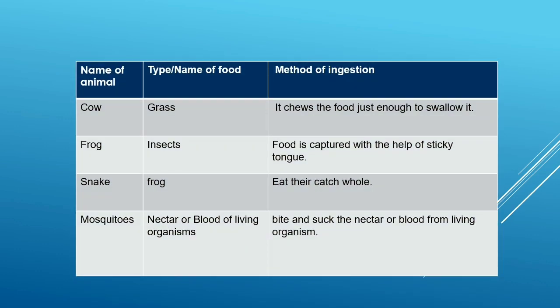Food of cow is grass. It chew the food just enough to swallow it. Food of frog is insects. Food is captured with the help of sticky tongue. Food of snake is frog. Snake eat their catch whole. The food of mosquitoes is nectar or blood of living organisms. They bite and suck the nectar or blood from living organisms.